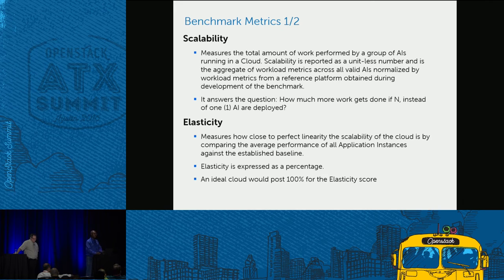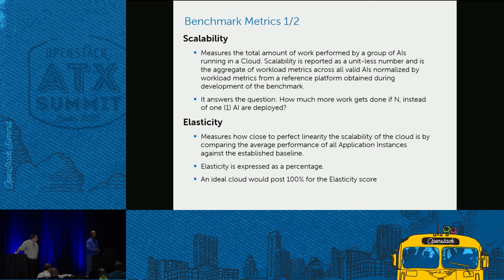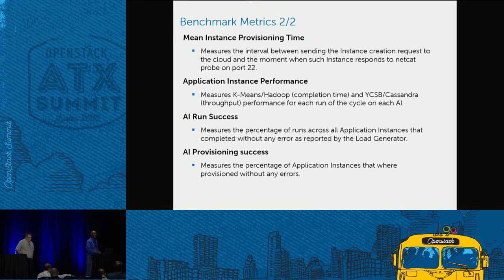The benchmark metrics include scalability — the aggregate amount of work being done, normalized by a number obtained during benchmark development. It answers the question: how much more work gets done if N instead of one application instance is deployed? Elasticity measures how consistently performance is maintained as load increases on the cloud, expressed as a percentage — an ideal cloud would score 100%. For scalability, the higher the score the better. We also look at mean instance provisioning time and AI run success — whether all application instances ran successfully.